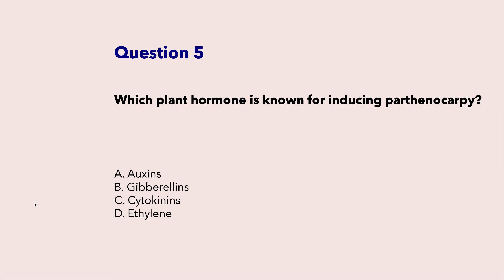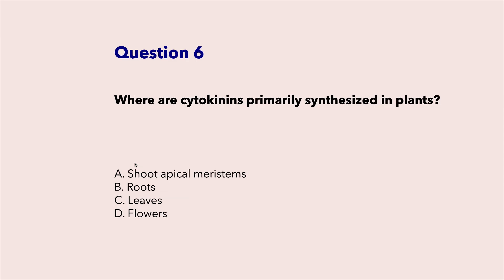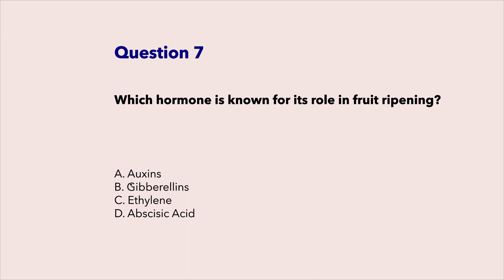Which plant hormone is known for inducing parthenocarpy? Auxins. Where are cytokinins primarily synthesized in plants? Roots. Which hormone is known for its role in fruit ripening? Ethylene.